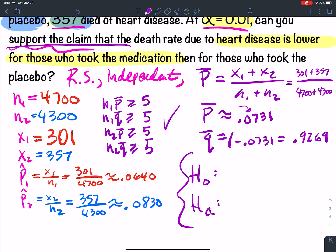So P1 is going to represent, P1 will represent those who took the medication.